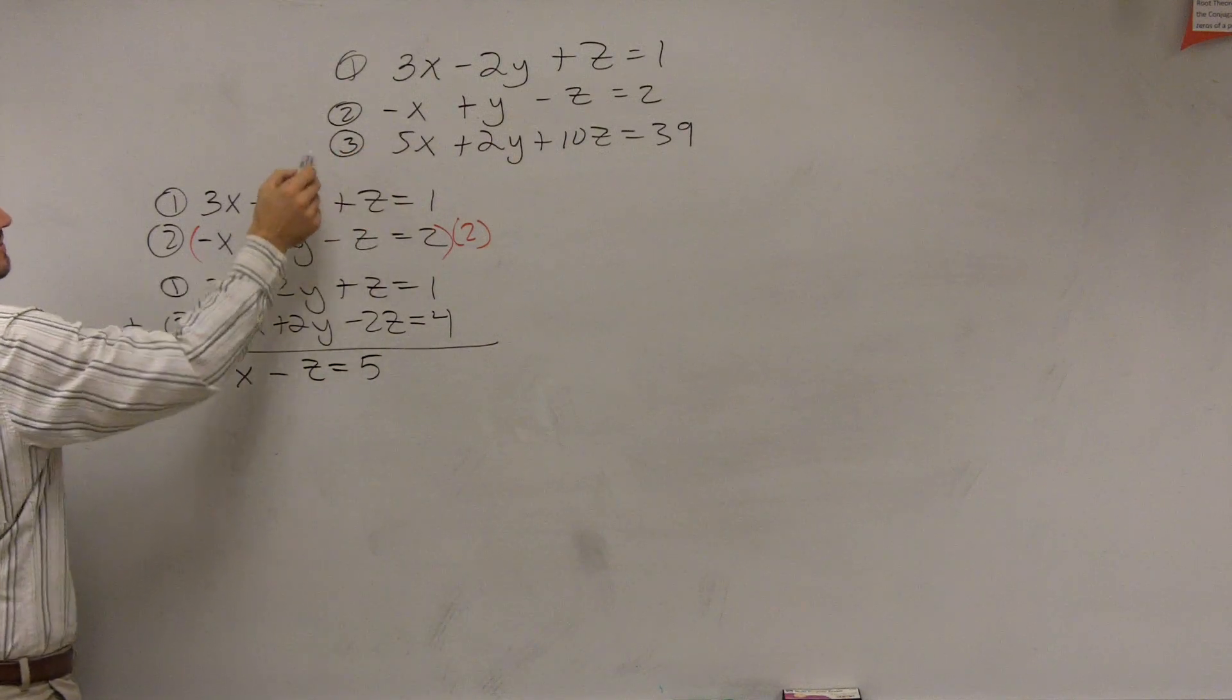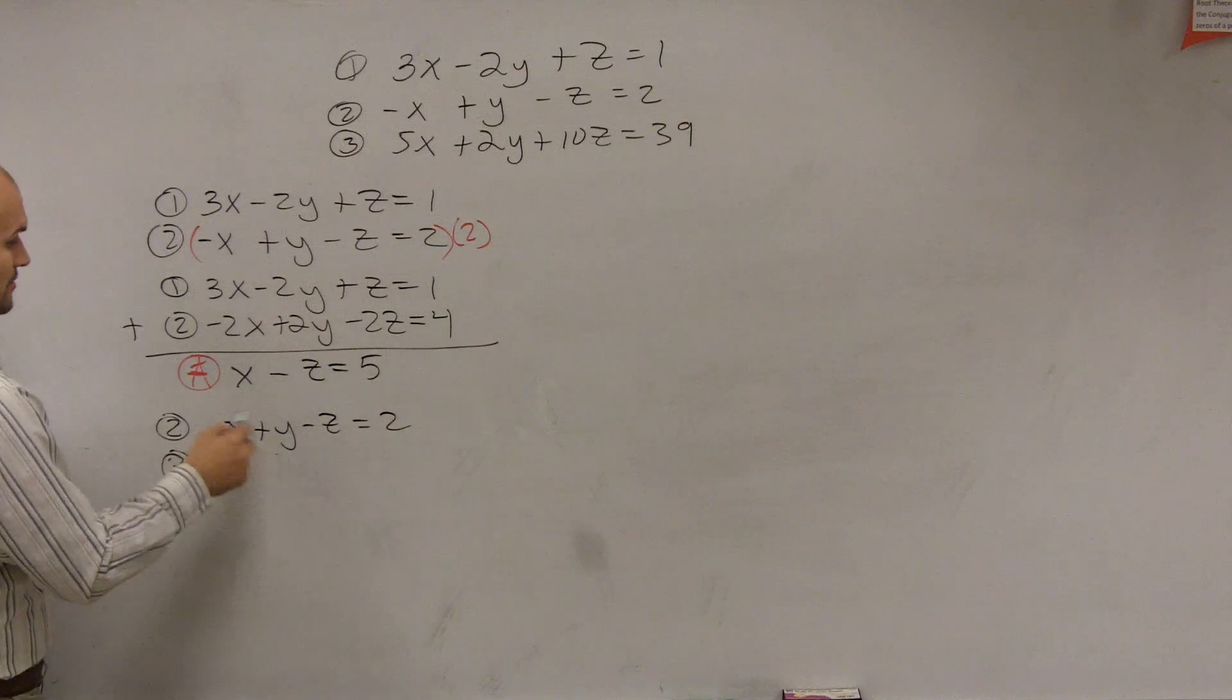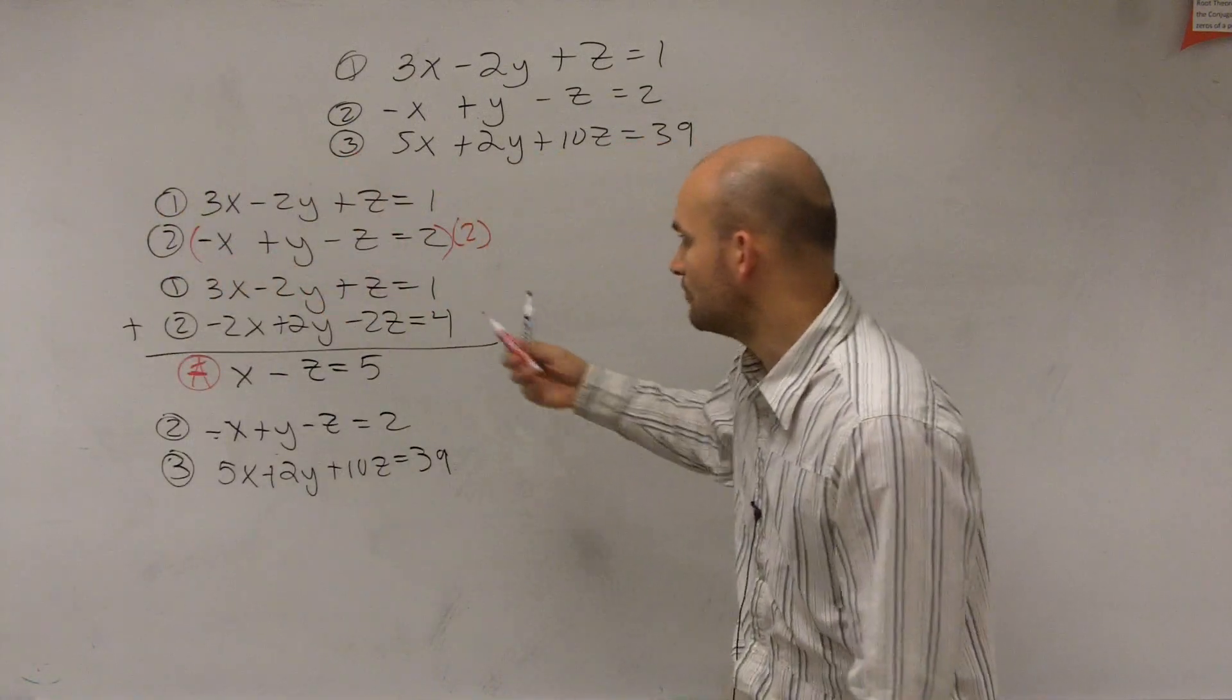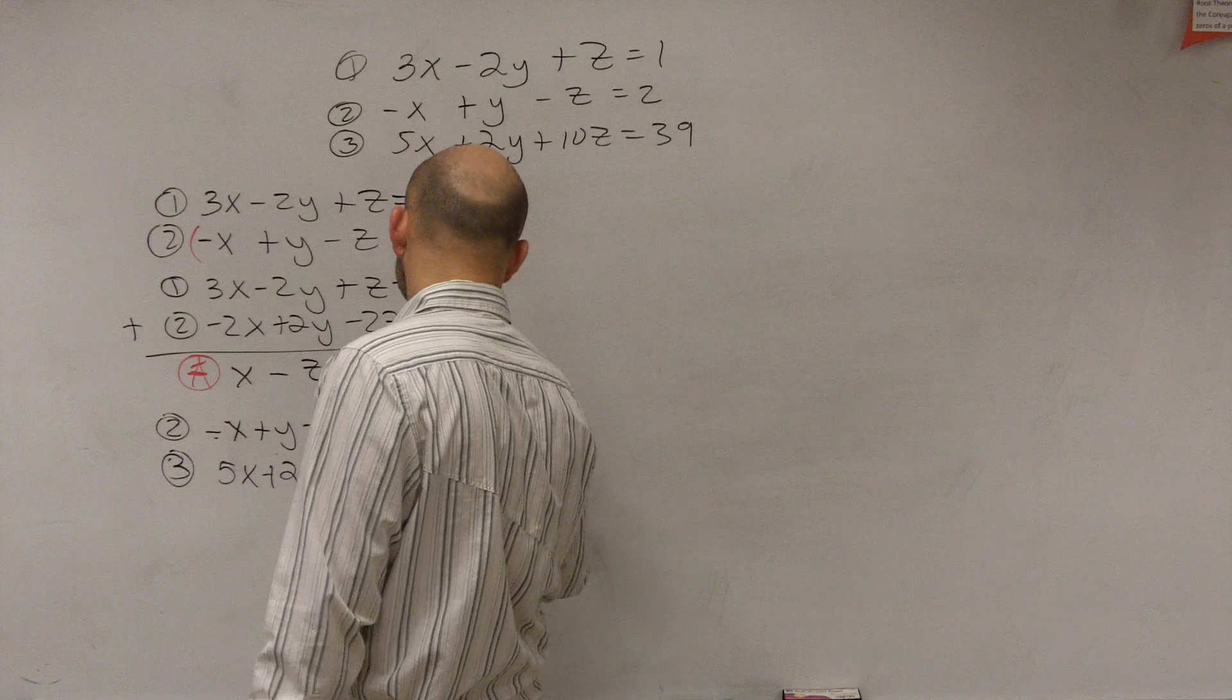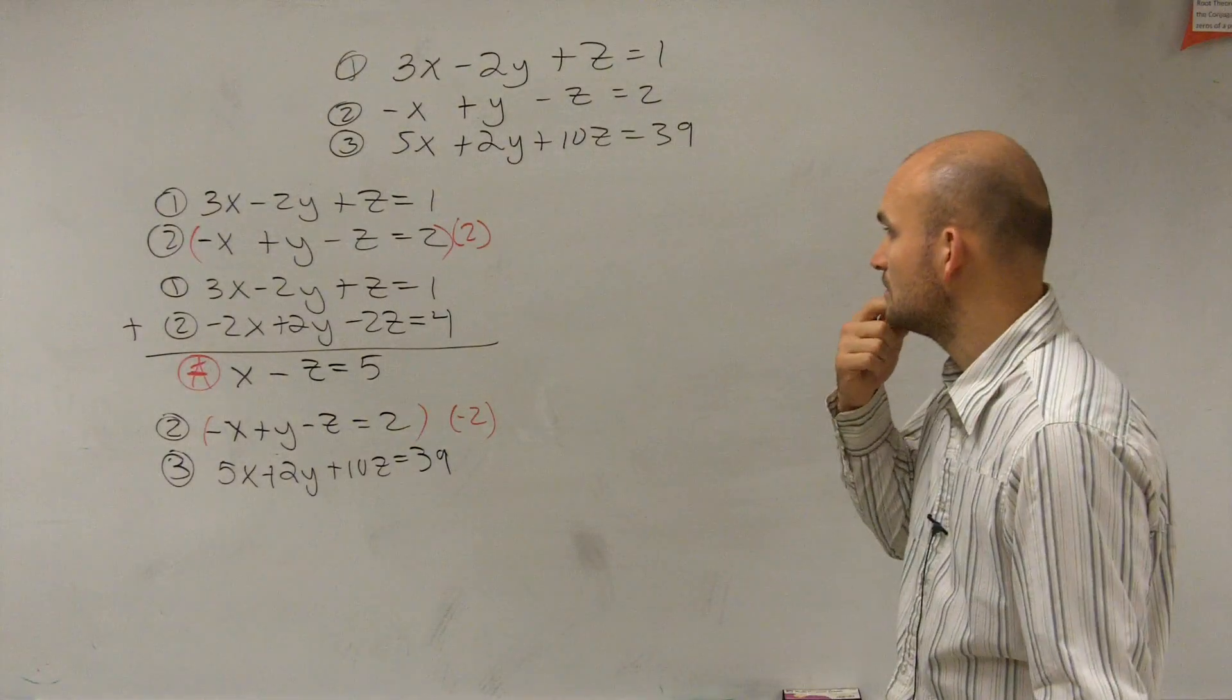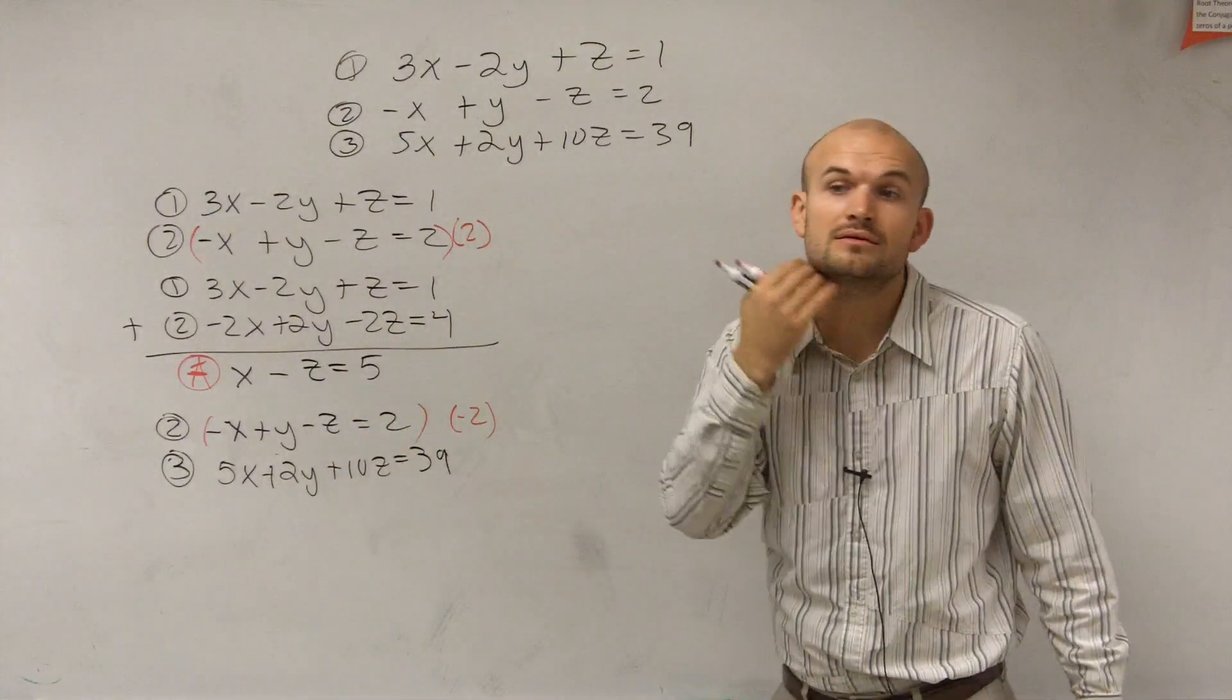Now I need to eliminate y between equations 2 and 3. So I write down my equations 2 and 3. So 2 again is negative x plus y minus z equals 2. And equation three is 5x plus 2y plus 10z equals 39. And we look at that and we say, to use elimination, to eliminate y, I need to multiply my top equation by negative 2. So I multiply the top equation by negative 2. Why is it y minus 2? That's equation three. You first eliminate your two equations, then you eliminate your other two. But equation two is remaining the same because I'm eliminating this y.